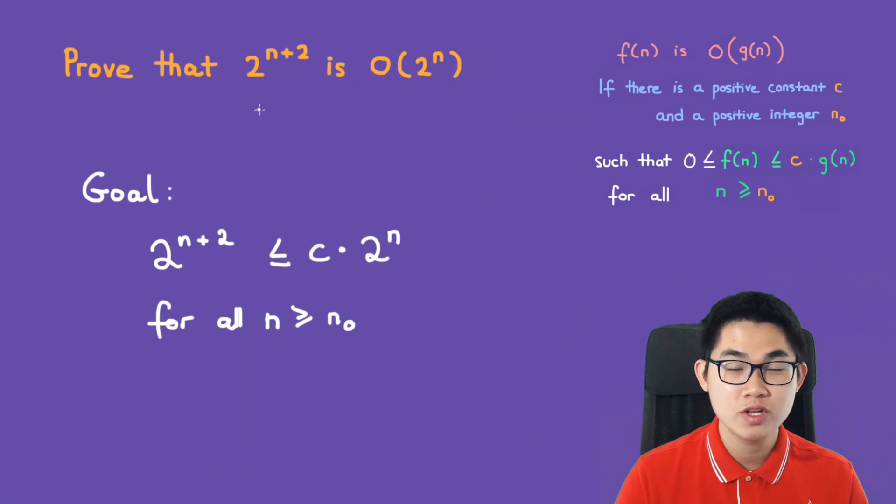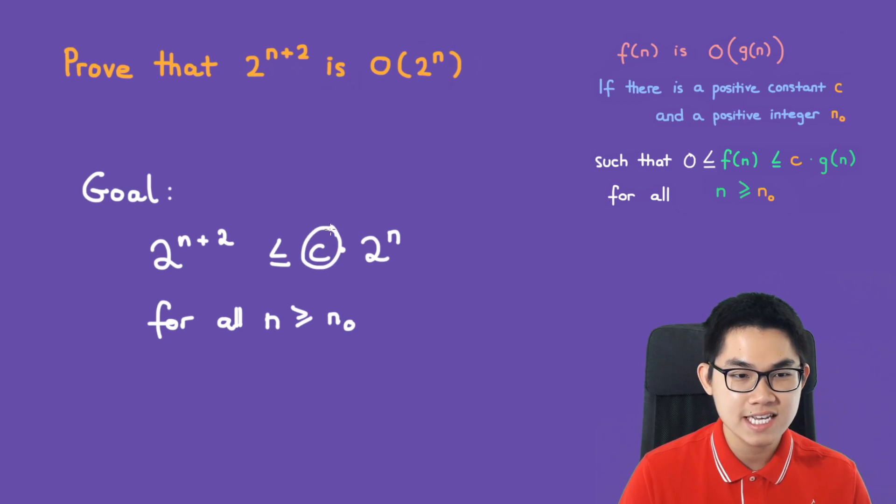Prove that 2^(n+2) is O(2^n). Our goal is to find a constant C and a constant n₀ such that this inequality is true.